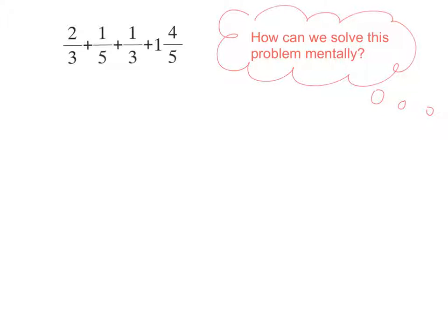Let's go ahead and copy this problem into our notebooks. Two-thirds plus one-fifth plus one-third plus one-and-four-fifths. Now before we start to solve it, let's analyze it first. How many terms does this problem have? Show me with your fingers. Yeah, it has four terms. If we count, we can see one term, two terms, three terms, four terms. So we could do two-thirds plus one-fifth and find the total, and then we could add one-third to that total, and then we could add one-and-four-fifths to that total. But is there a better way?